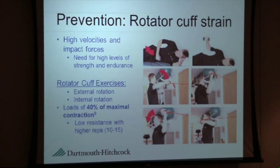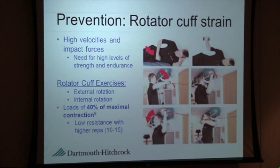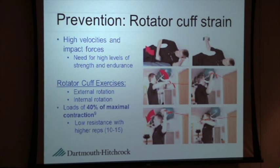For prevention of rotator cuff strains, we want to focus on the smaller muscles of the shoulder — mostly the external and internal rotators. With snowboarding, there are high velocities and high impact forces, and most falls are taken to the upper extremities, so a high level of strength and endurance is needed. Importantly, only about 40% of maximal contraction is needed to get the right activation. This means lower resistance with higher repetitions — if you bring the load too high, the bigger muscles will be activated and compensate, and the smaller ones we're trying to strengthen will be used less.